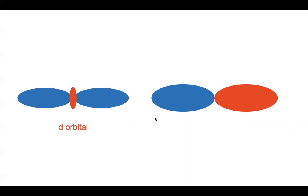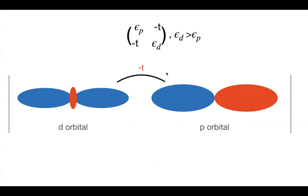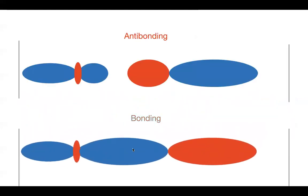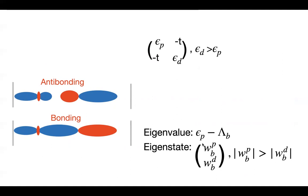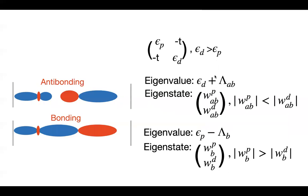Now consider a simple hypothetical one-dimensional PD model, similar to what you'd have in some transition metal compounds. You have a D orbital, a P orbital, and a hopping between them. In the matrix, the initial energy of the D state is higher than the energy of the P state. Bringing them together gives a bonding orbital and an antibonding orbital. The bonding orbital eigenvalue is shifted down and is mostly P in character, while the antibonding orbital is mostly D in character and its energy is shifted up.